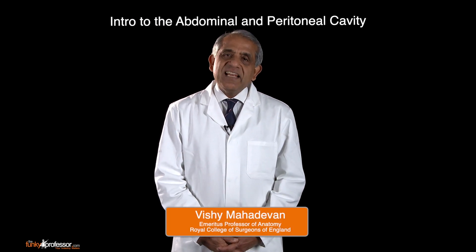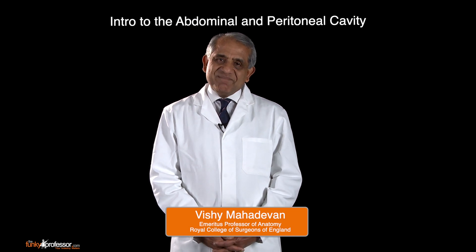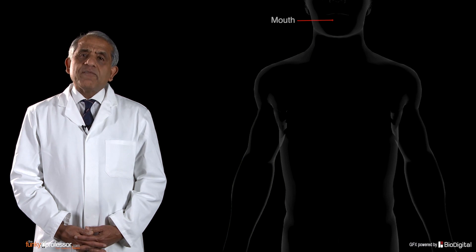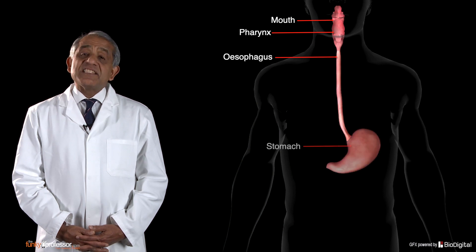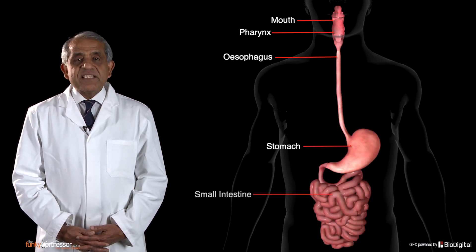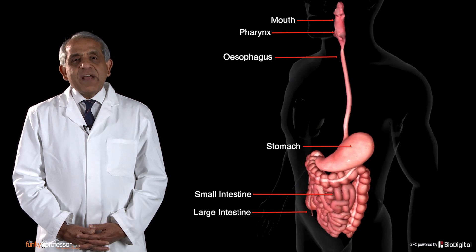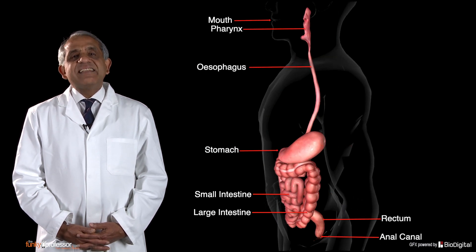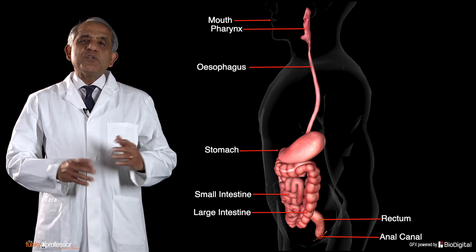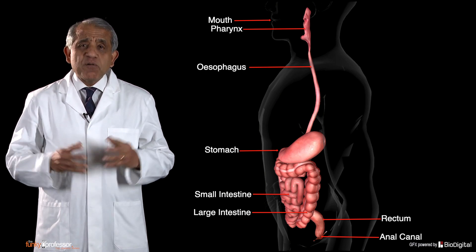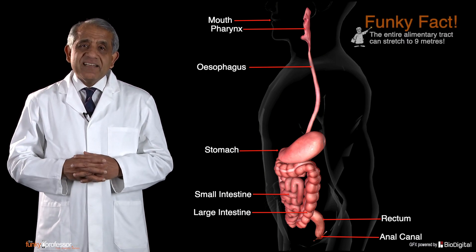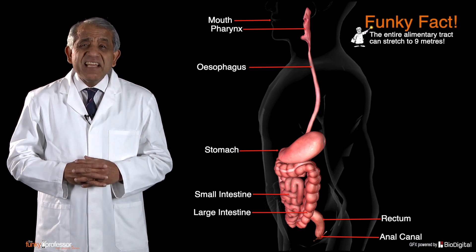Most of the digestive tract lies within the abdominal cavity. The digestive tract, otherwise known as the alimentary tract, is made up in succession of the mouth or oral cavity, the pharynx, the esophagus, the stomach, the small intestine, the large intestine, the rectum, the anal canal, and the anus or anal orifice. If I were to remove the entire alimentary tract intact and stretch it from one end to the other, it would be about nine meters long.